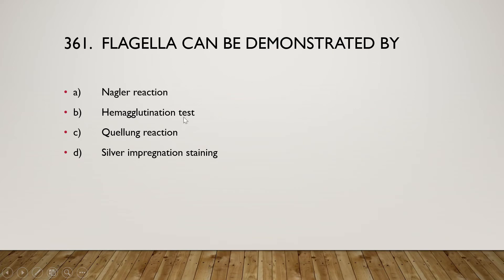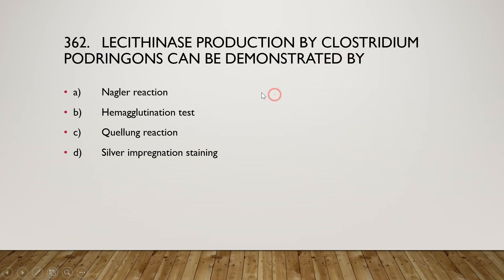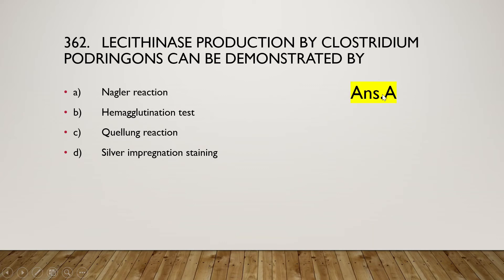Next: flagella can be demonstrated by which method? The right answer is silver impregnation staining. Next: lecithinase production by Clostridium perfringens can be demonstrated by Nagler reaction, hemagglutination test, Quellung reaction, or silver impregnation staining? The right answer is option A, Nagler reaction, which is used for the lecithinase production test.